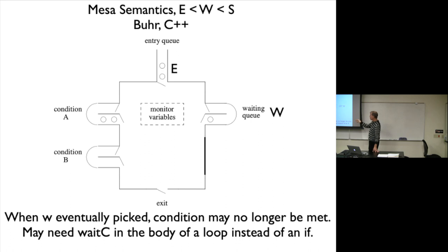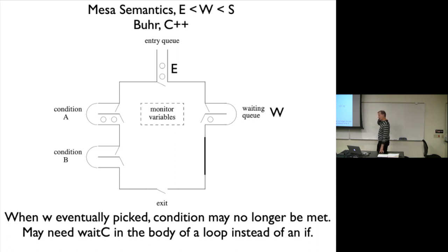In other monitor types, when the signaler signals, the signaled process is put in the waiting queue while the signaler keeps executing. If the signaler executes more code, the condition under which the signaled process was put into the waiting queue may no longer hold. So best practice is to use while(condition) rather than if, to handle all these possibilities. I'll show this in code shortly.